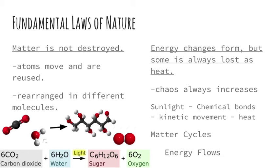The other fundamental law is that energy can change form, but when it changes form some is always lost as heat. Another way of saying this is that chaos always increases in the universe. Energy may start out in one form, like sunlight, and it might be captured within the chemical bonds of molecules, and from there it can be changed to kinetic movement, which allows you to walk and talk. But eventually, every step of this process, some of the energy is lost as heat.